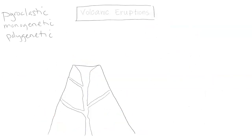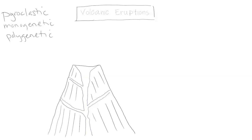I've drawn a general stratovolcano — it's narrow, with steep 30-degree angle sides. It's basically a layered lava and ash composition with a central conduit system of a central vent, dikes, and maybe some fumaroles, releasing the gases from the volcano. It could have a parasitic cone or some cinder cones on the slopes.